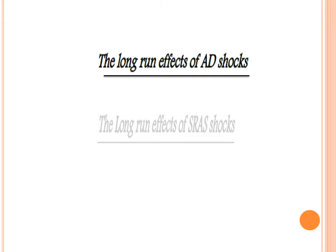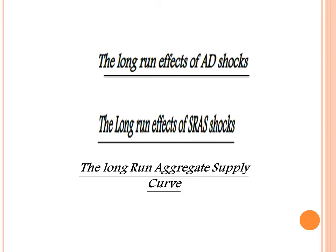This lecture will cover the following points. First, the long run effects of aggregate demand shocks. Second, the long run effects of SRAS shocks. Third, what is meant by the long run aggregate supply curve, how to derive this curve, and what it means. And finally, we will take the paradox of thrift — what is meant by the paradox of thrift.